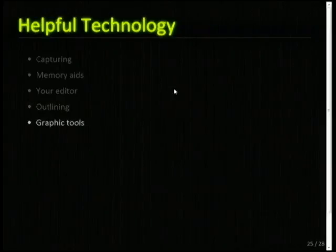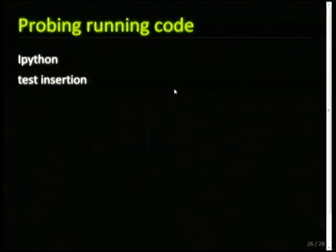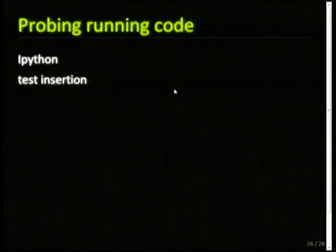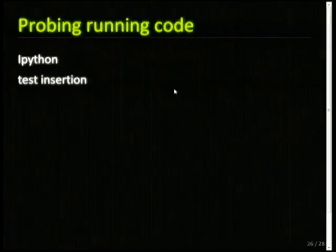Graphic tools — we don't use those so much, but there are tools available to make simple graphs, and tools to take ASCII-drawn graphs and turn them into nice pretty ones. We've just been talking about dealing with the code as written, but you really want some tools to deal with it when it's running. IPython is a perfect tool for that, and now with the notebook features you can do those explorations and save them so they're available to you. Another way to deal with running code is to write your own code.